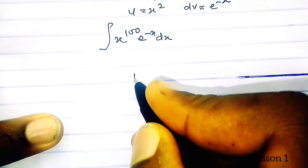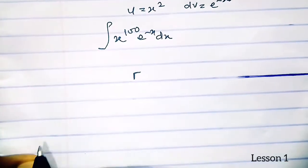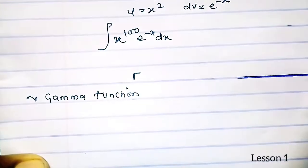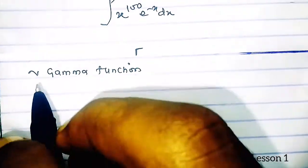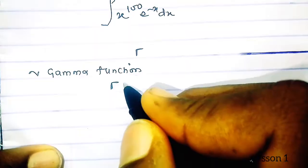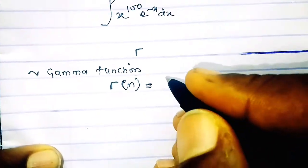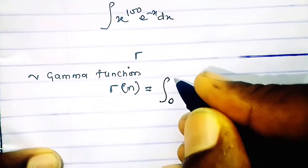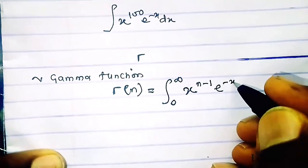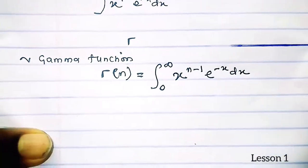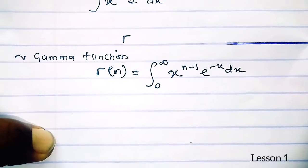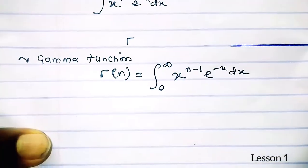We use the symbol Γ to represent the gamma function. The gamma function of n is defined by the integral from 0 to infinity of x raised to the power n minus 1 times e to the minus x dx. This is the standard representation of the gamma function.